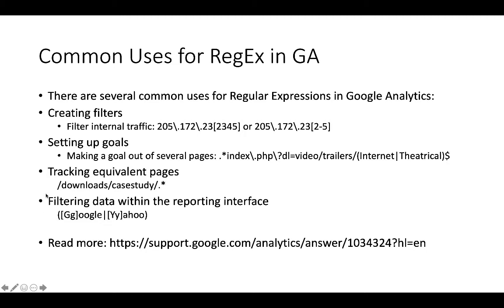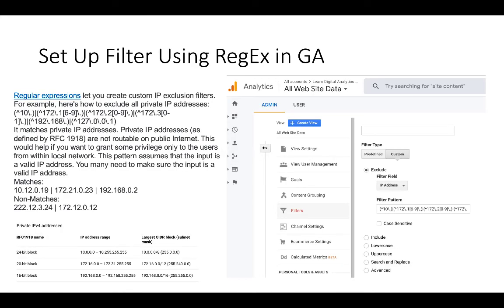For example, a regex will match any URL with the 'index.php' page, with the parameter 'download=video', then a 'trailers' folder, and then either 'internet' or 'theoretical' — but there shouldn't be any string after this part because of the dollar sign. You can also use regex to check equivalent pages, such as any pages under the 'case-study' subfolder under the 'downloads' folder. You can also use regex to filter data within the reporting interface.